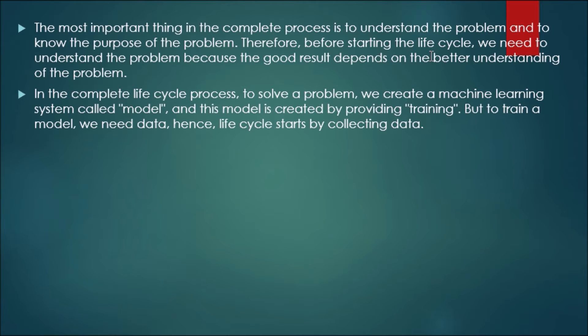The most important thing in the complete process is to understand the problem and to know the purpose of the problem. Before building any project, we need to know the problem whose solution we are building the project for. Therefore, before starting the life cycle, we need to understand the problem, because the good result depends on the better understanding of the problem. In the complete life cycle process, to solve a problem, we create a machine learning system called a model.